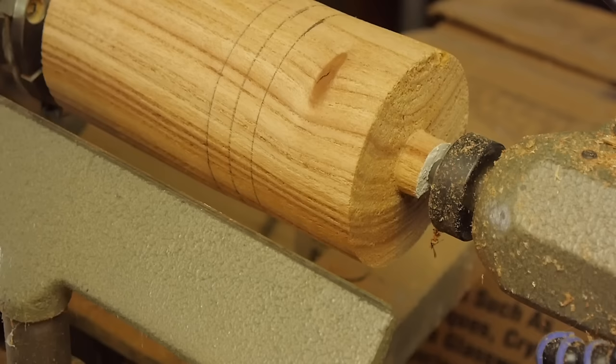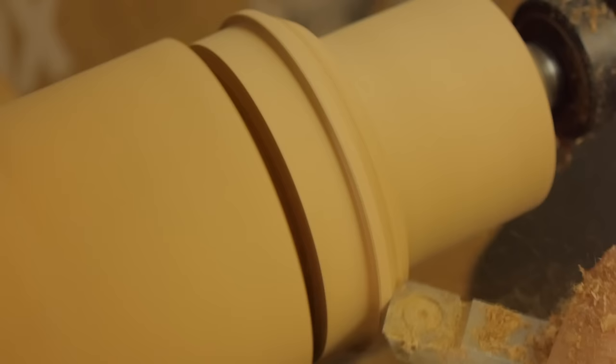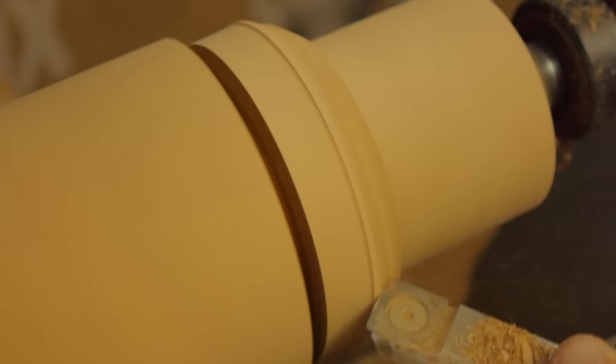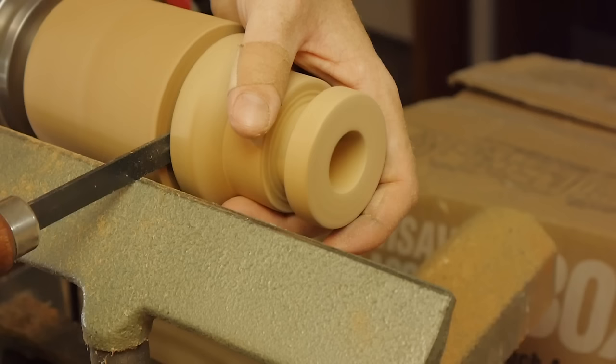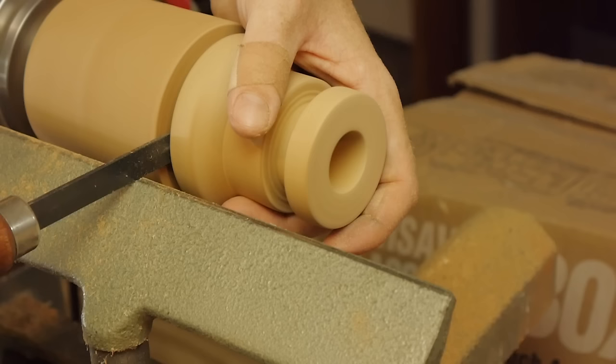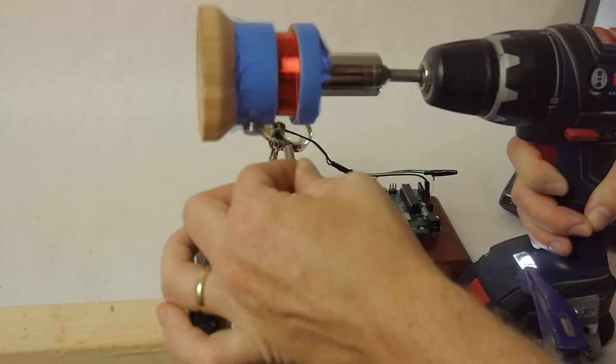The uprights were connected to the base using washer head wood screws. The platforms were turned on the lathe from a piece of an elm tree that someone had cut down and left beside the road. First I turned the outside shape, then I drilled a hole in the bottom. Finally it was parted off. This process was replicated for the other platform.